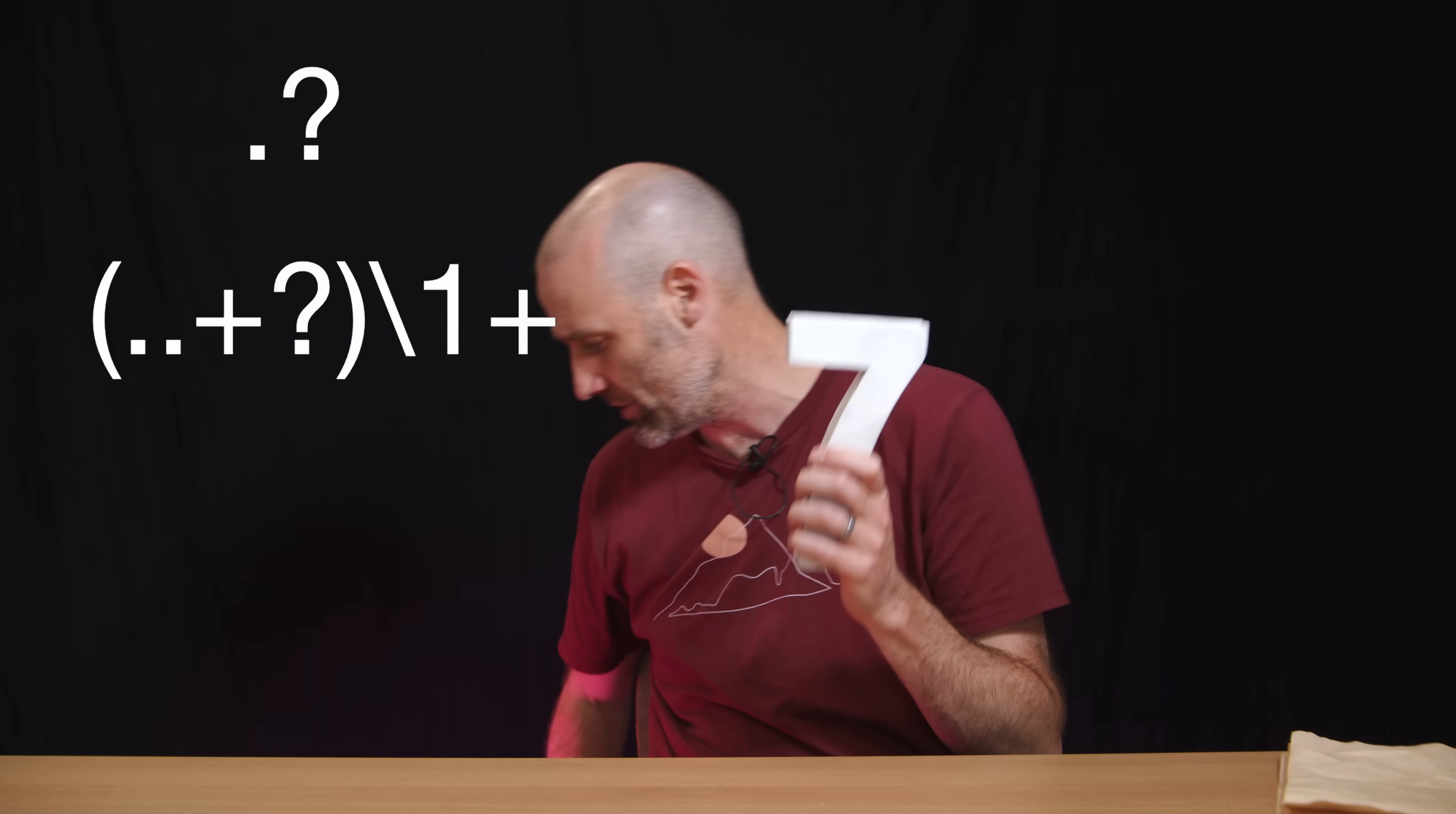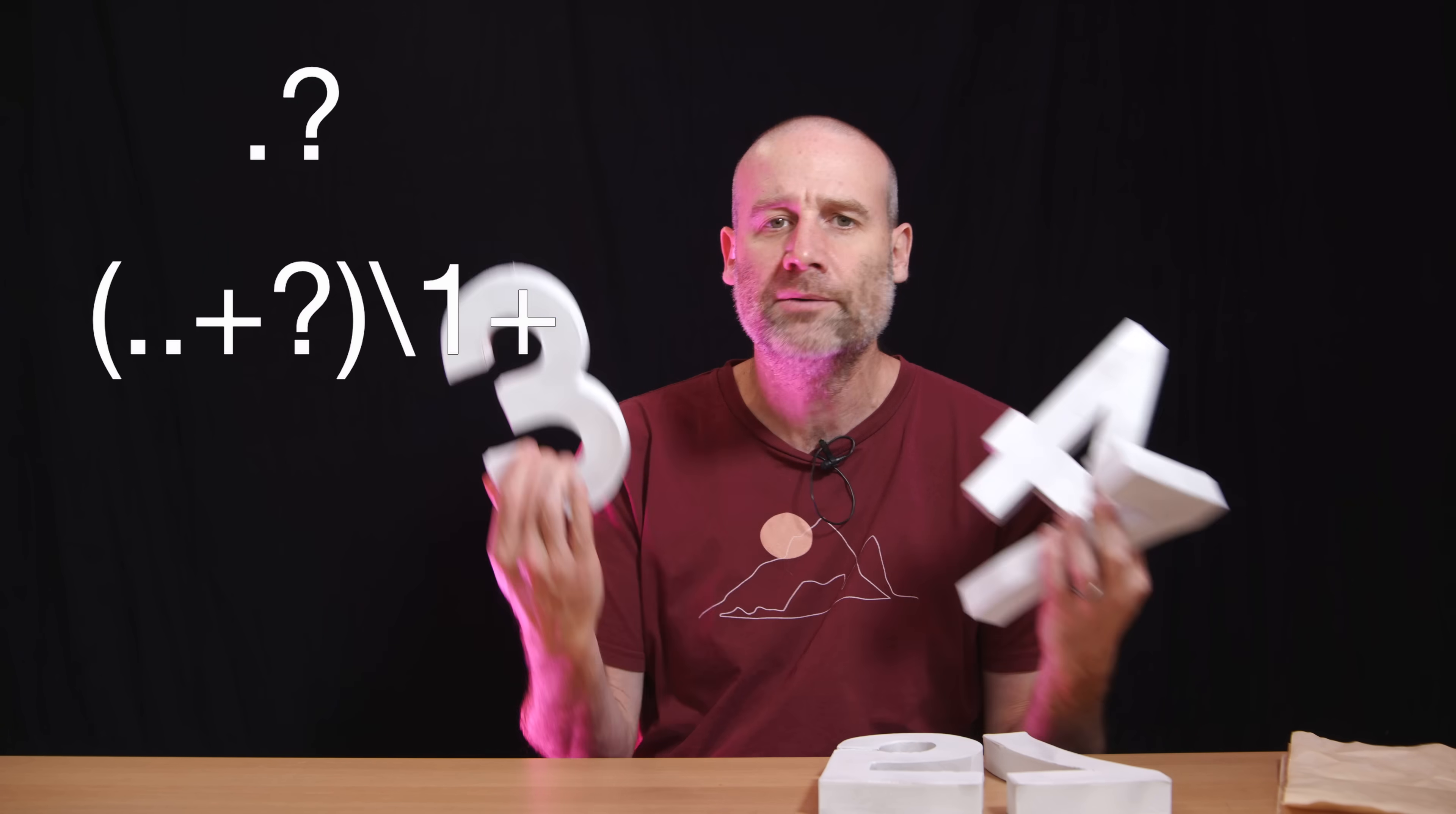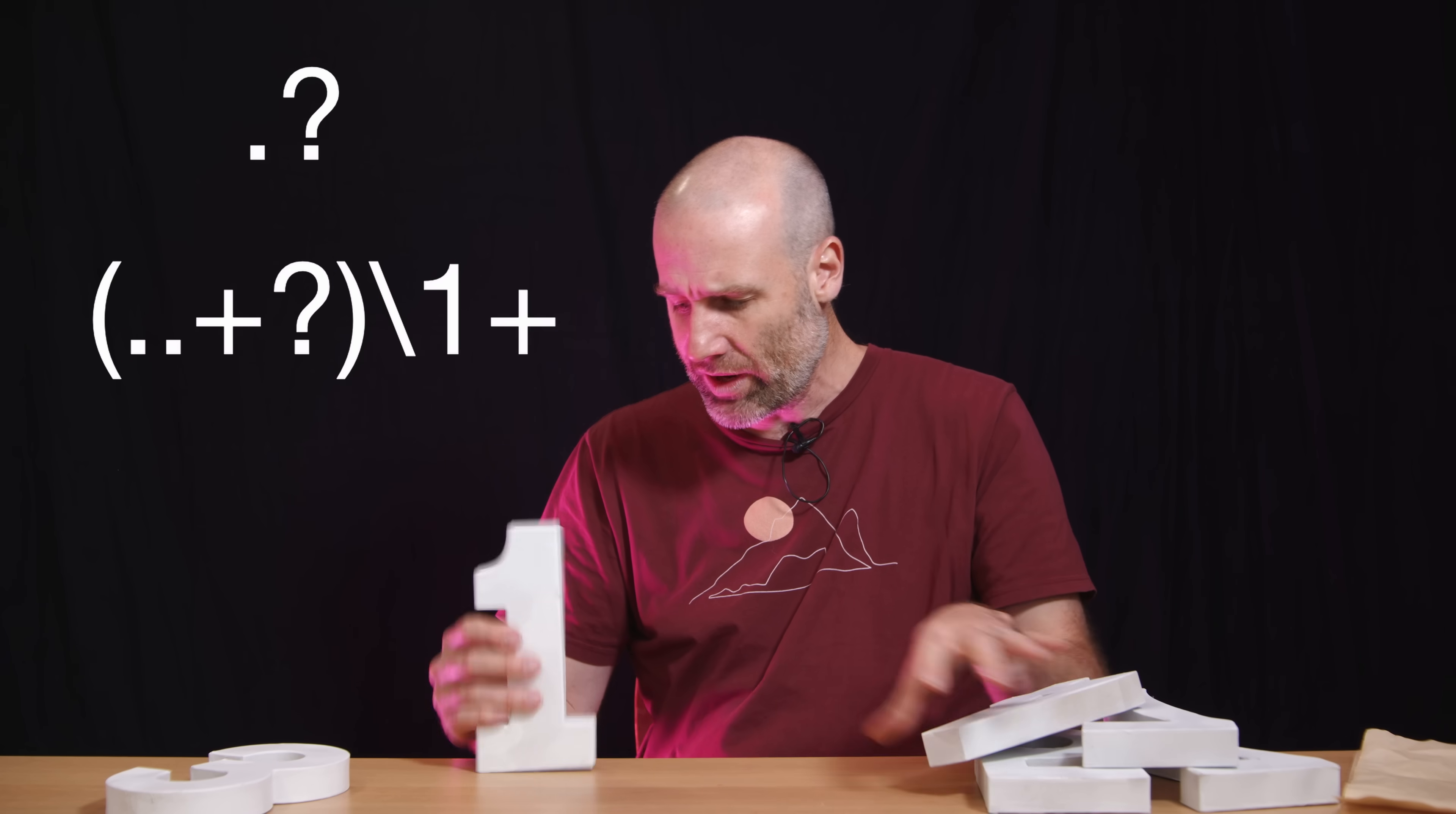You may have noticed in my code from earlier, we were not actually matching n, the number itself. We were matching n times the character, the digit, one. And in this case the asterisk is not part of the regex. It's just multiplication. And that is saying that you turn whatever the number is that you're sending in.